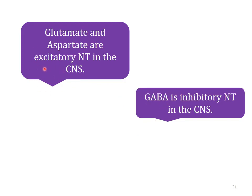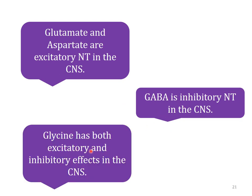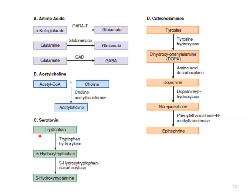Glycine has both excitatory and inhibitory effects — in some places it acts as excitatory, in others as inhibitory. Important neurotransmitter synthesis pathways: glutamate and GABA are derived from the amino acid alpha-ketoglutarate; acetylcholine from acetyl-CoA and choline; serotonin (also called 5-hydroxytryptamine) from tryptophan; and dopamine, norepinephrine (noradrenaline), and epinephrine (adrenaline) are all derived from tyrosine. These neurotransmitters can also act as hormones.